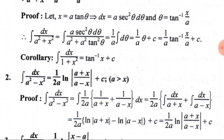These two integrals give ln|a+x| and ln|a−x| plus C, the integral constant. Using the logarithm quotient rule, we get (1/2a)·ln|(a+x)/(a−x)| + C.